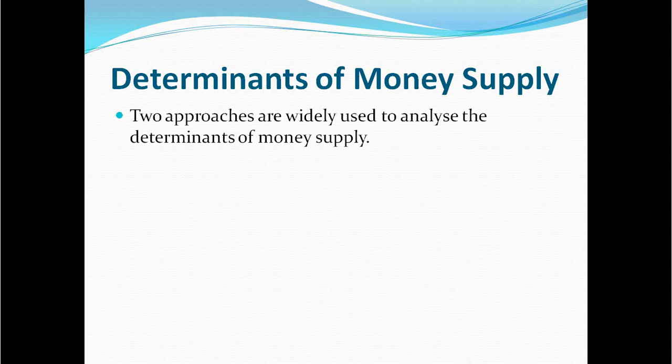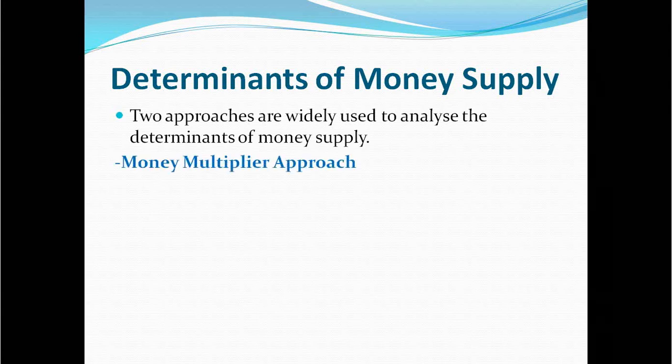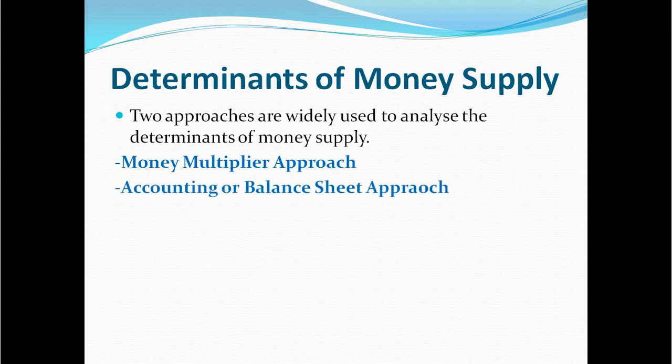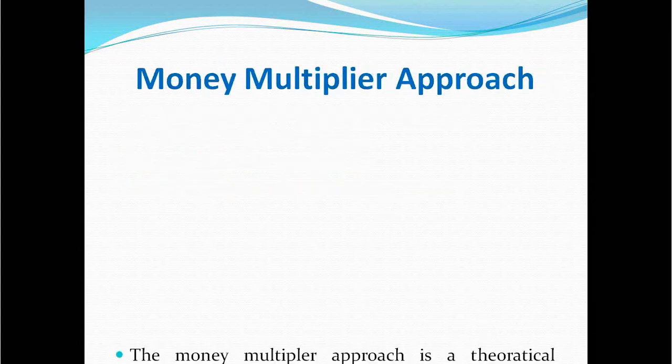There are two approaches widely used to analyze the determinants of money supply. The first one is the money multiplier approach, and the second one is the accounting and balances approach.